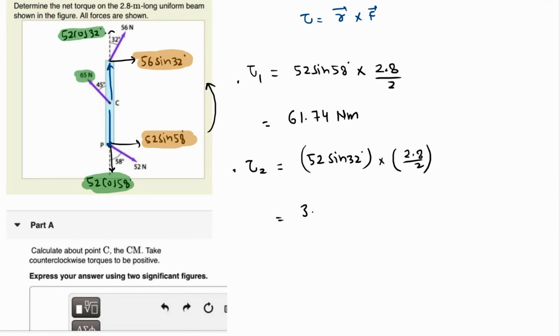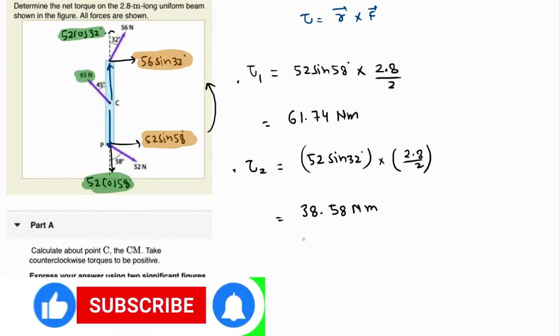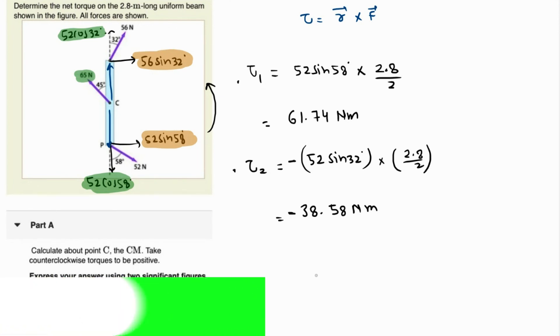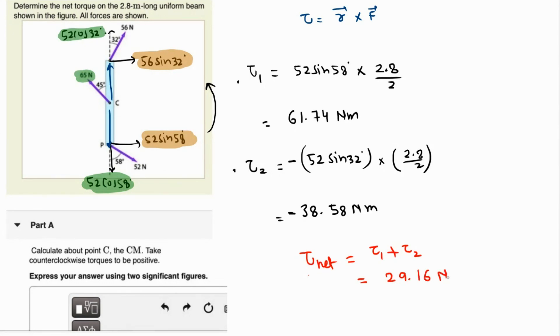So the net torque, definitely this tau 2 will be negative because that's acting in clockwise sense. So the net torque is going to be tau 1 plus tau 2, and basically that's a subtraction. So that's 23.16 newton meters. Thank you.